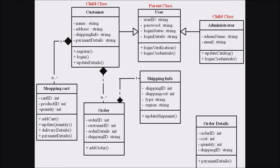Next we are dealing with Order Detail. Order Detail is a class with methods and attributes. This Order Detail class is related to the Order class with a composition relationship, and there is also an association. The Order has an Order Detail, and the multiplicity is: one order has one order detail.